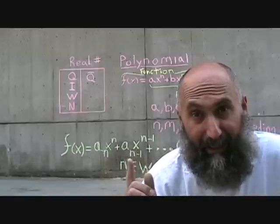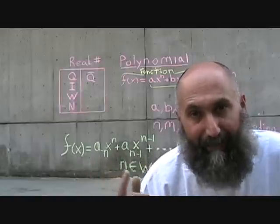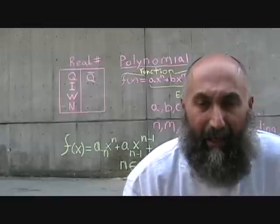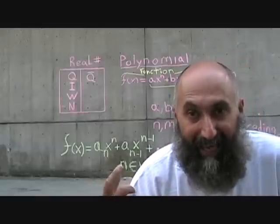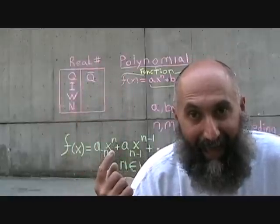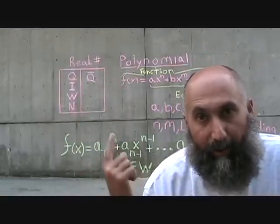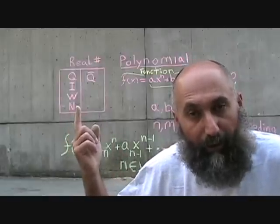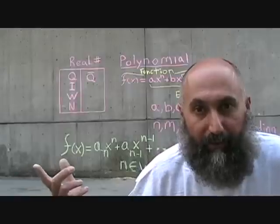The a's just mean the coefficients, toggling n minus 1, minus 2, minus 3 — they're just saying the constants could be the same or could be different. So the a's could be anything from the real number set. And x's exponent n has to be one of the whole numbers — it can only be a whole number, or positive integers, but those are whole numbers.